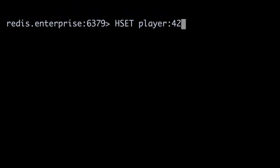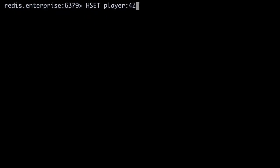Here again, we'll use the hset command to add a new field value pair. So the command we'll run is hset player colon 42 status dazed.